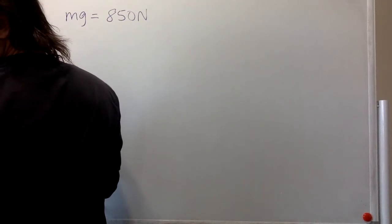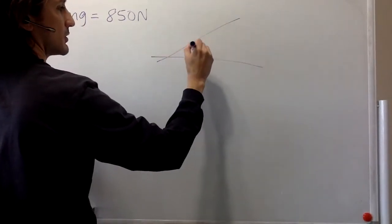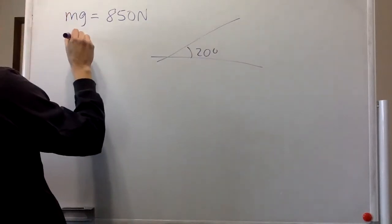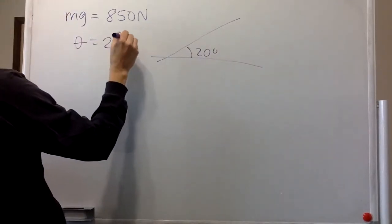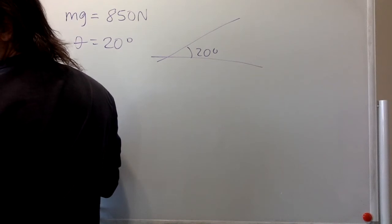And he's standing on a roof that is sloped at a 20 degree angle. And we are asked to calculate the magnitude of the normal force on the roof of the worker.